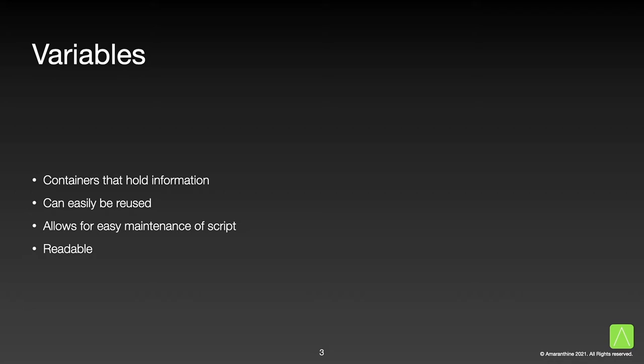First up we will look at variables. Variables are containers that can hold information. They allow us to use information in our tasks simply by reusing the variable it is stored in. This results in a leaner, cleaner, and more compact script. The biggest advantage of variables is that if there is a need to change the data being stored in a variable at a later date, then we only have to change the value in the variable. All other statements in the script which use this variable will simply start using the new data.